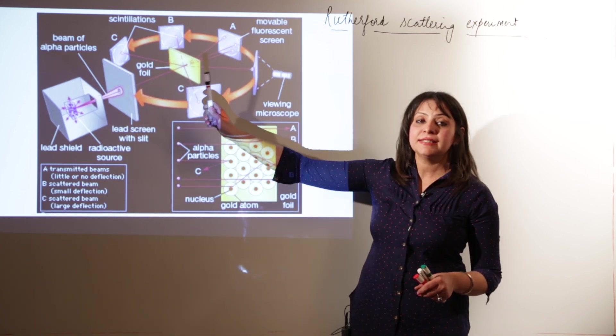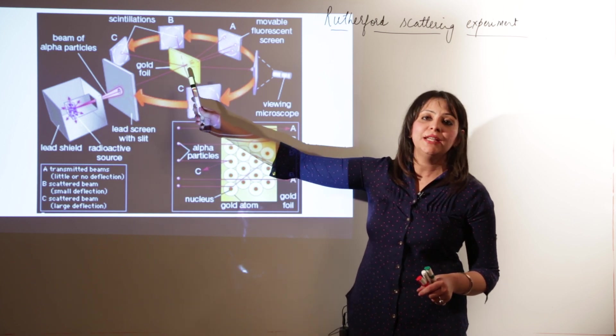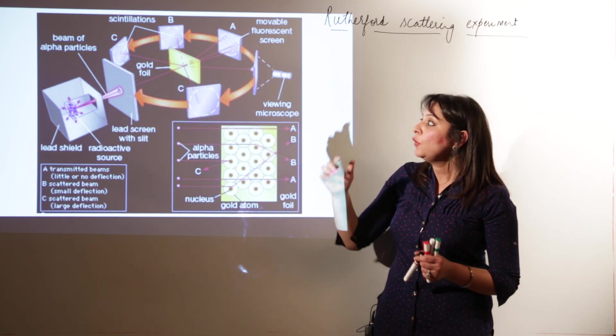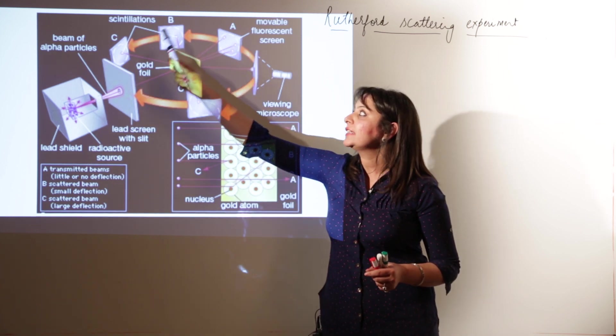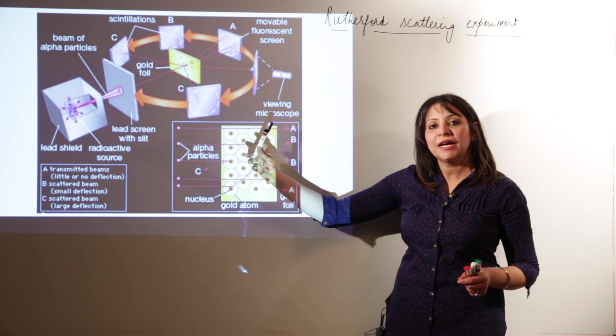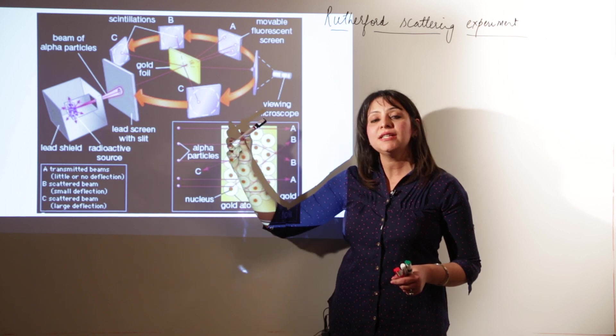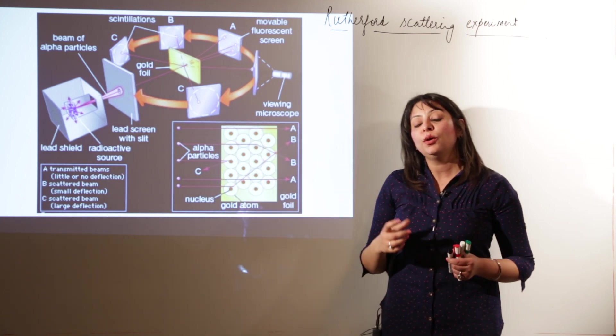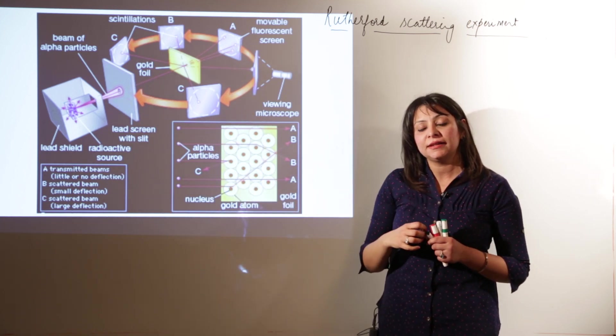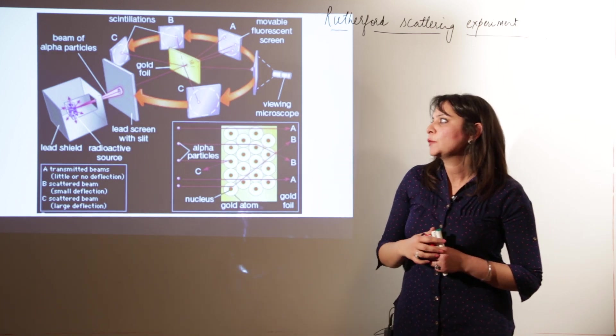Then he used the sample for his experiment, which was a thin gold foil. And around it was a fluorescent material screen. You know what is fluorescent material screen? We have done in a few experiments back also. Fluorescent screen has the ability to glow whenever any particle strikes it. It produces scintillations, the colorful patterns.